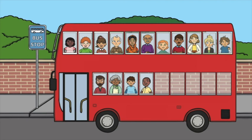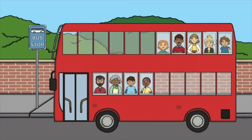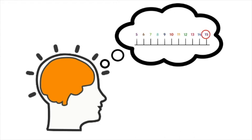First there were fifteen passengers on the bus. Then six passengers hopped off. Fifteen take away six — now there are nine passengers on the bus. Fifteen take away six equals nine. Imagine the number line starting at fifteen and count back six: one, two, three, four, five, six. The answer is nine. Fifteen take away six equals nine.